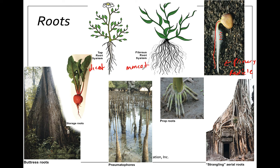Another type is the fibrous root system, common in monocots. The main root disappears and lateral branching roots take over, creating a kind of knot of roots. If you look at a palm tree or grasses you'll see this. Fibrous root systems commonly help with soil erosion — they keep the soil in place so the plant still has soil to absorb nutrients from.